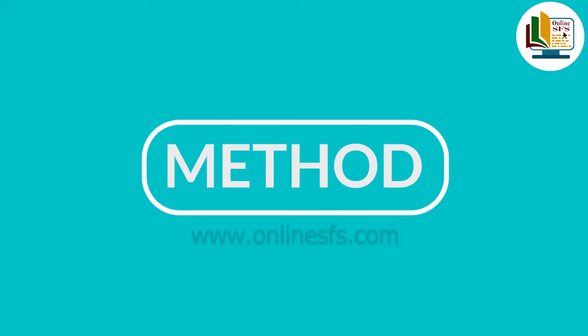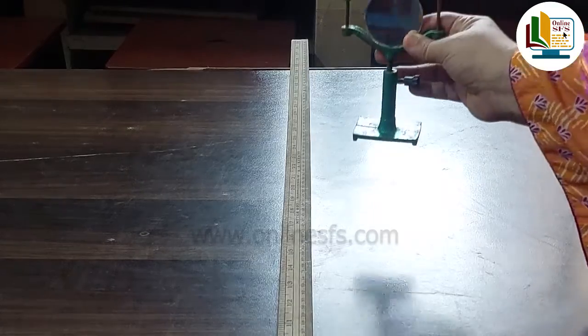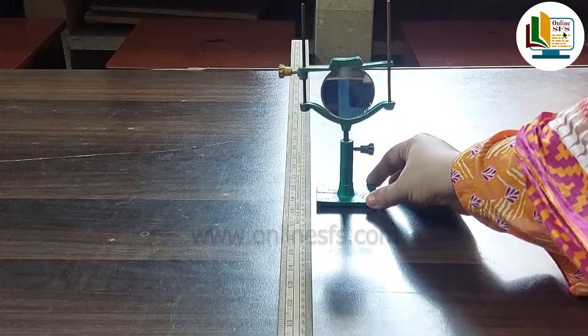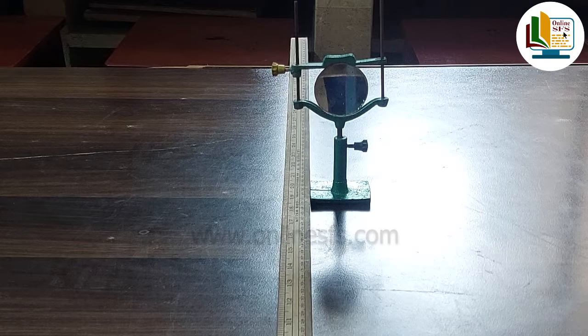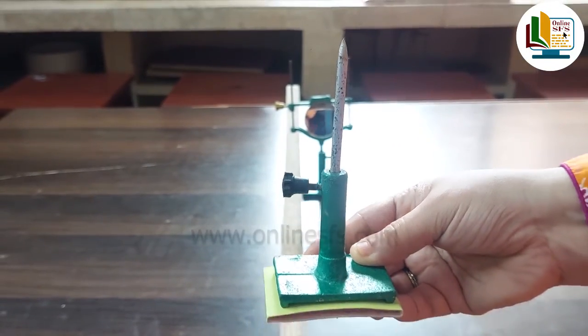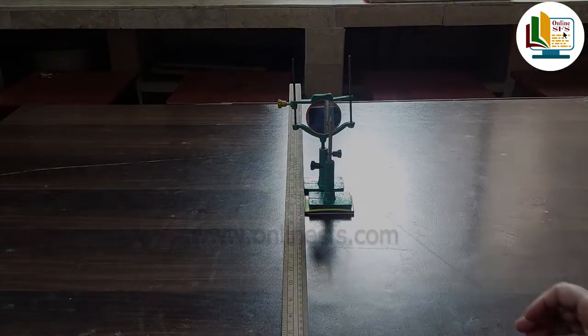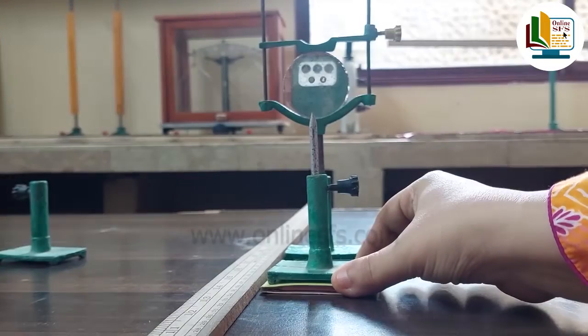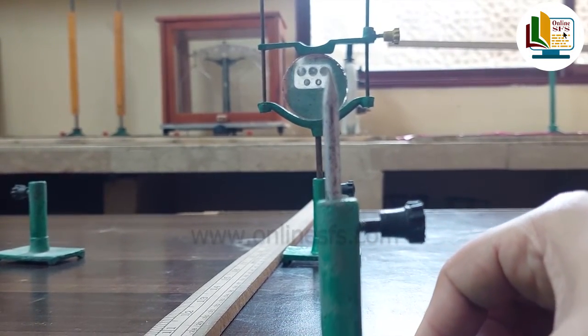Let's see the method. This is called the object pin. Slowly pin ko move karenge till we get a real inverted and sharp image as you can see here.